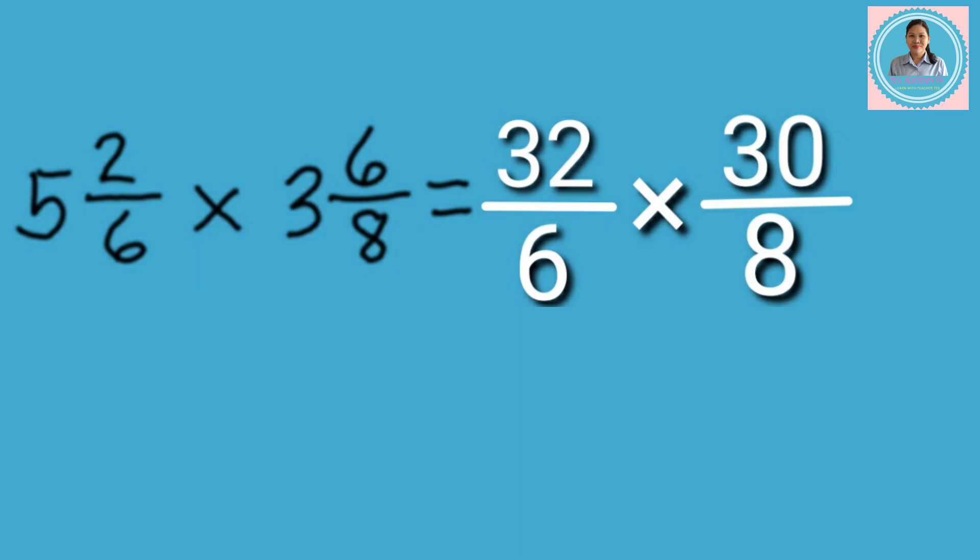Look at the numerator of the multiplicand and the denominator of the multiplier. What is the GCF of 32 and 8? We will divide them by their GCF. The GCF of 32 and 8 is 8. Let's divide them. 32 divided by 8 equals 4. 8 divided by 8 equals 1.